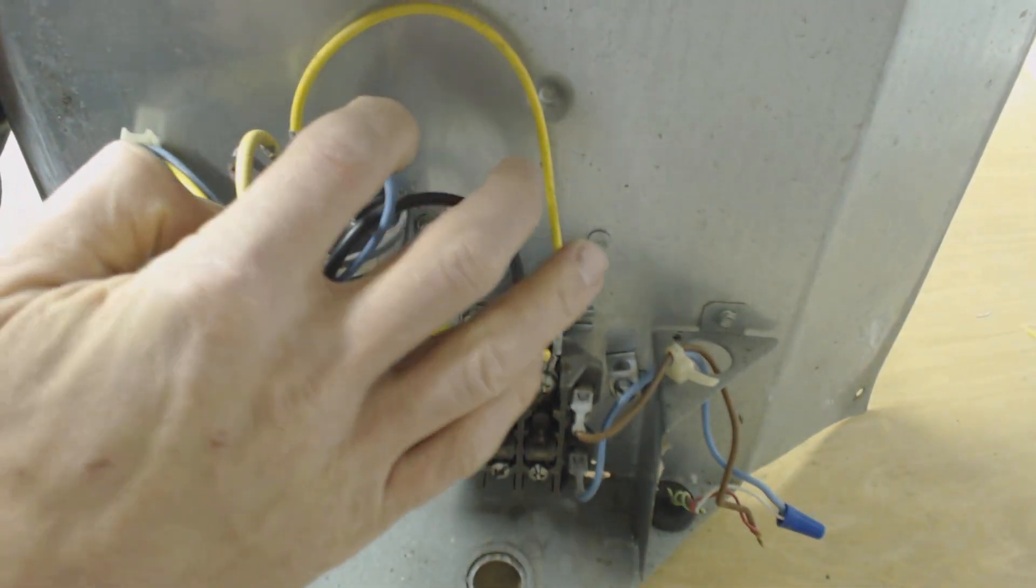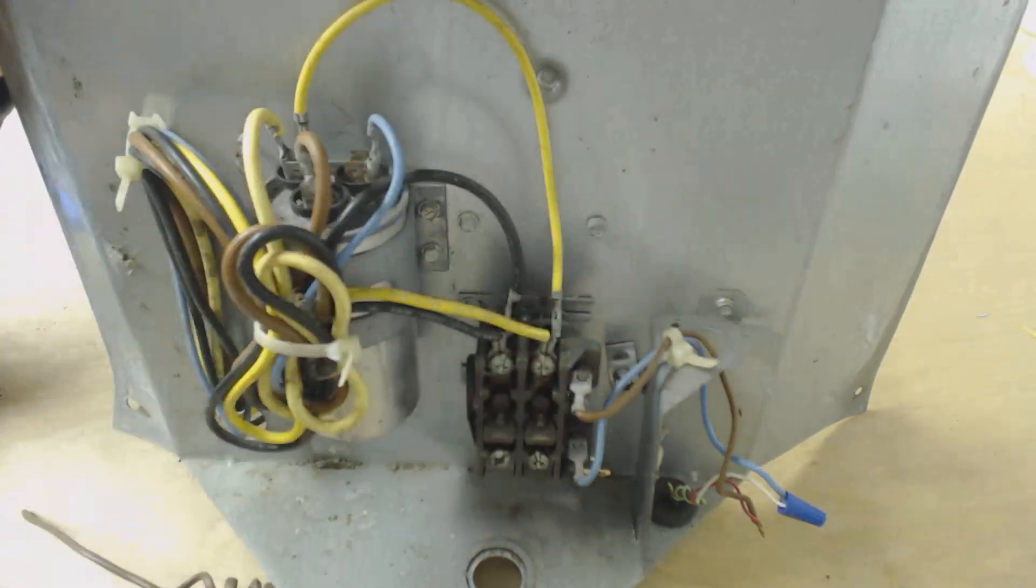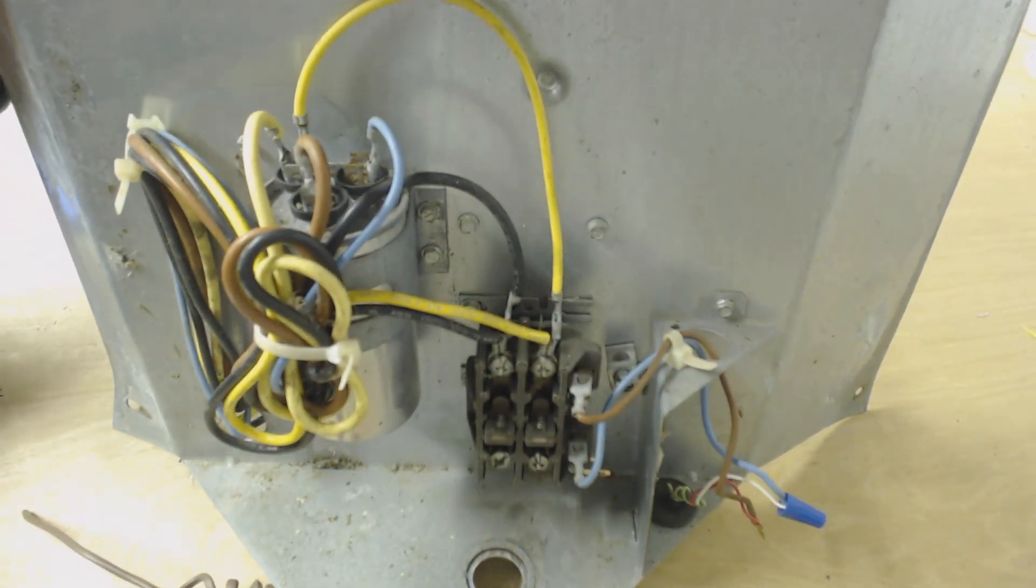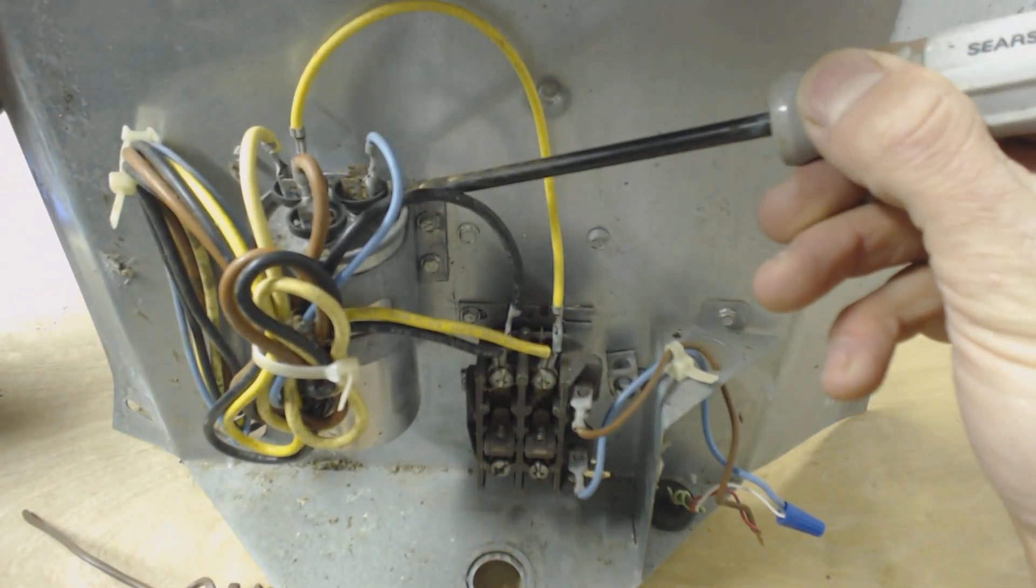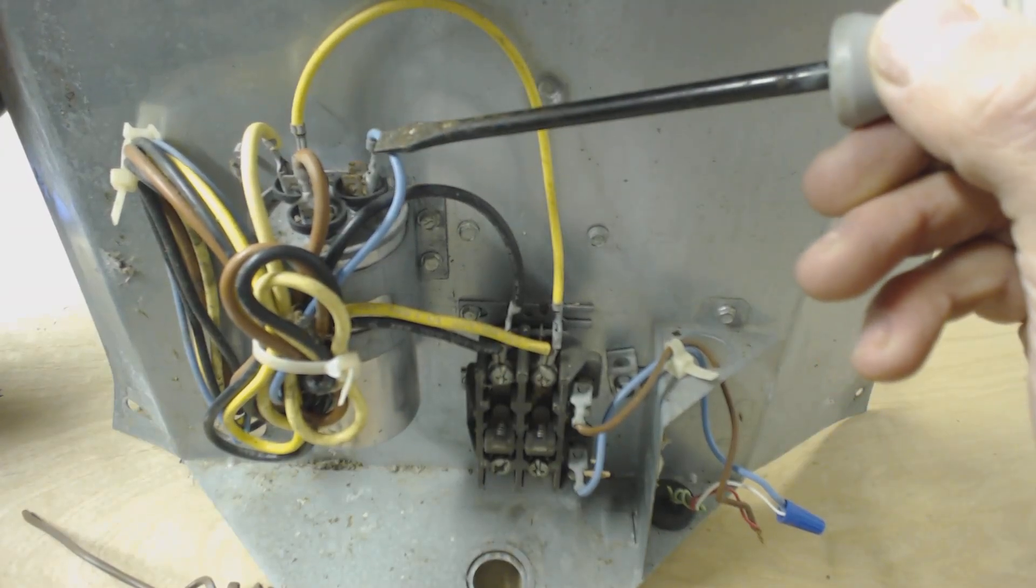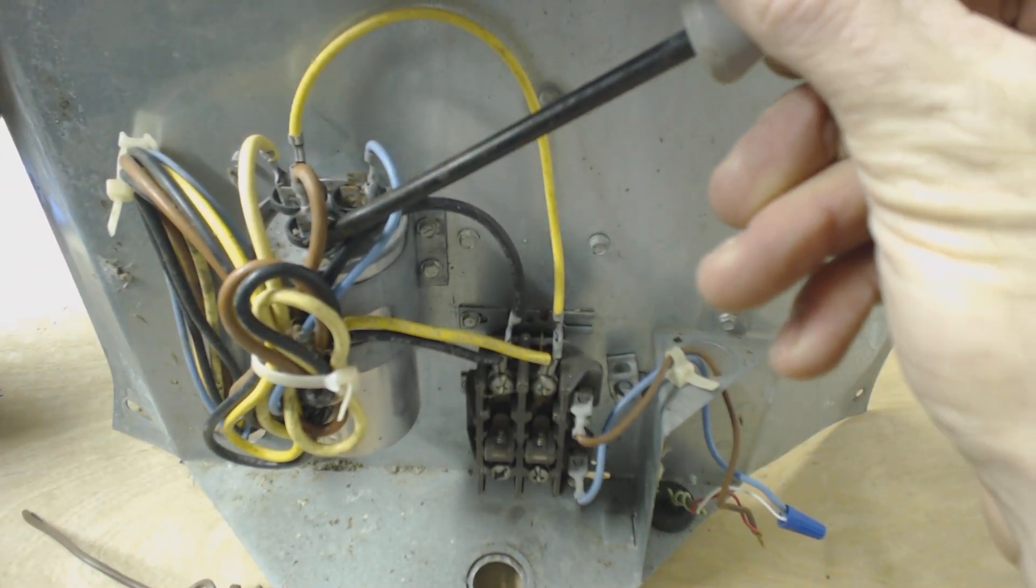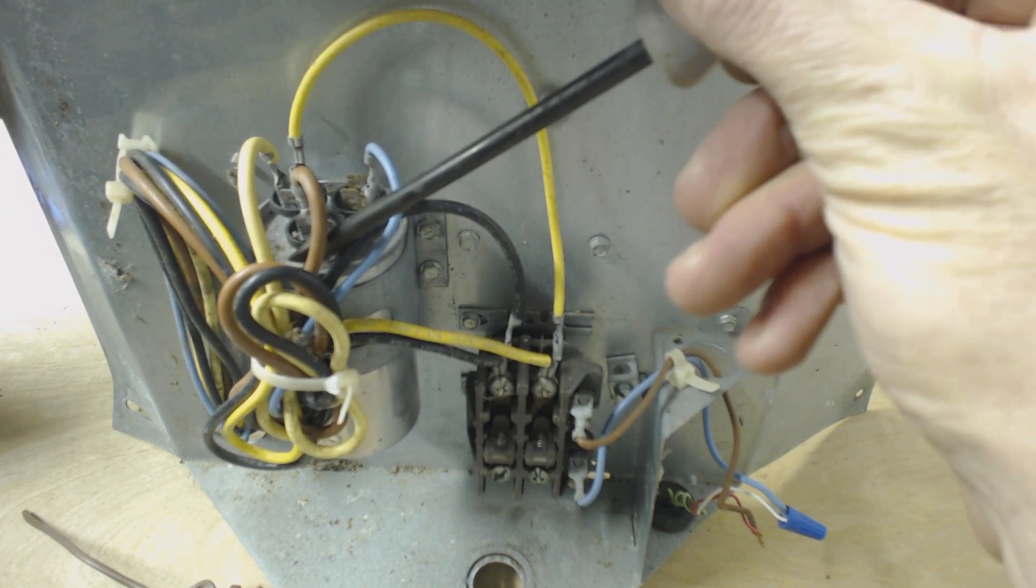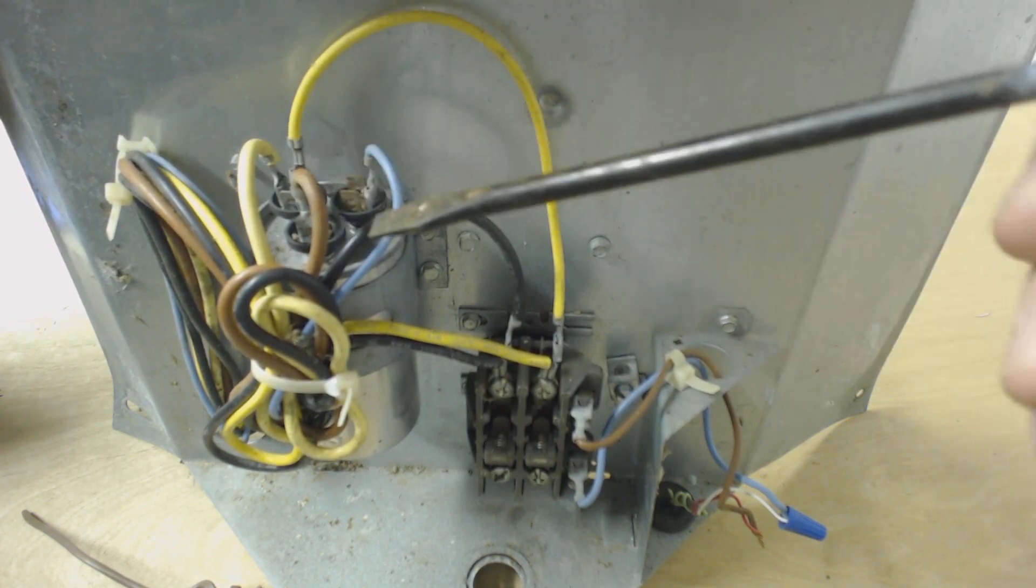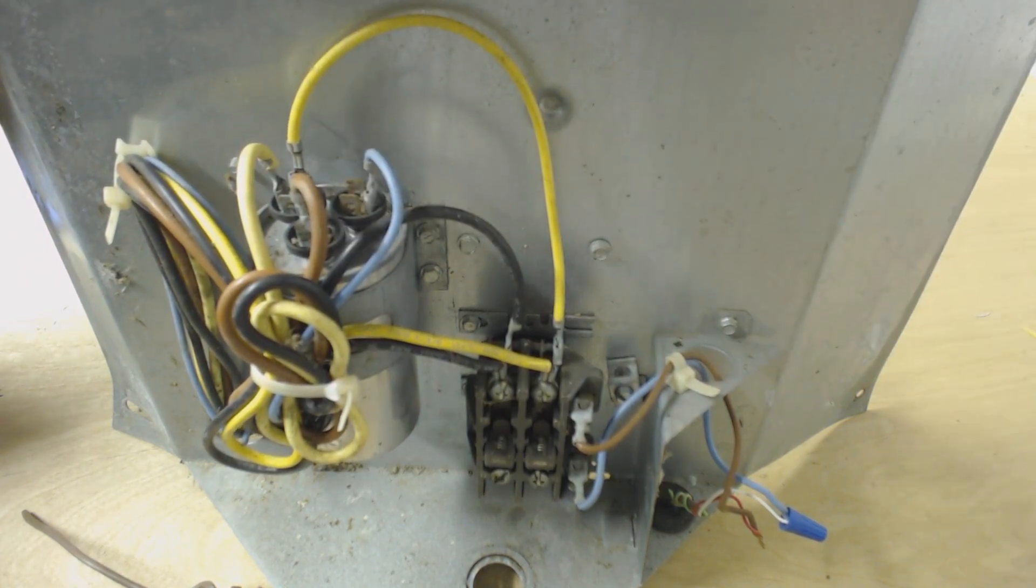The blue wire right here, right next to it on the capacitor, it says Herm, and that goes to the compressor. This brown wire right here says F or fan, and that one goes to the fan that's on the top of the outdoor condenser.